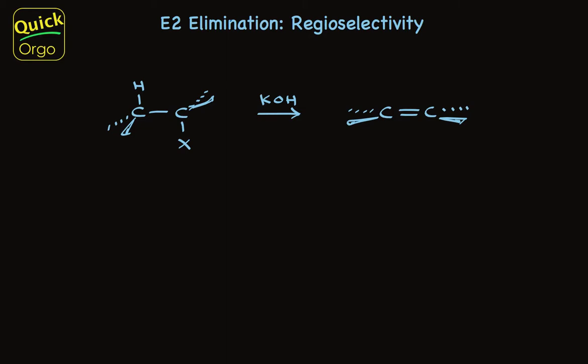Treating an alkyl halide with base causes 1,2 elimination of hydrogen halide to form an alkene, as I've shown here.